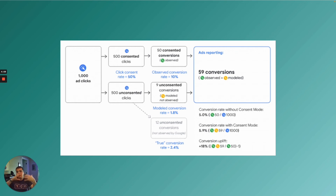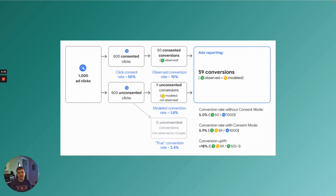As you can see here, Google Ads recorded clicks from both users who consented to cookies and users who did not. Based on the information from users who did consent, Google Ads was able to model those missing conversions — the conversion rate without consent mode would be 5%, and with consent mode, a more accurate 5.9%, reflecting a conversion uplift. It's not 100% data from non-consenting users, but in a world where users are more privacy conscious, some data to provide a more holistic picture is better than no data at all.